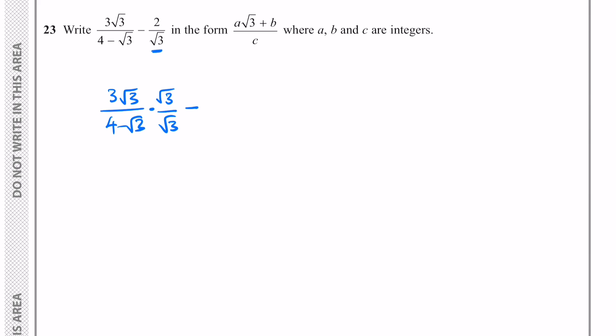And we want to multiply the second fraction by 4-√3, the denominator of the first fraction. So this is 2 over √3 multiplied by 4-√3 over 4-√3.